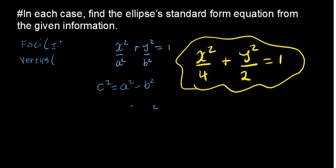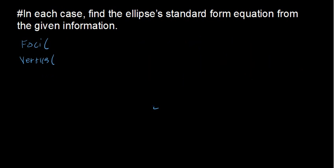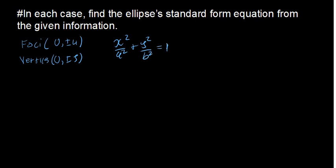Let's look at the next question. For this one, we're given the foci as 0 comma positive or negative 4, and the vertices as 0 comma positive or negative 5. It's quite clear this is on the y-axis, so the form is x squared over a squared plus y squared over b squared equals 1, and here b is greater than a since it's elongated on the y-axis.